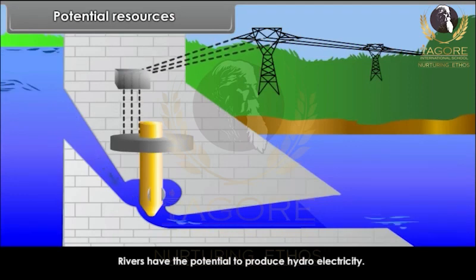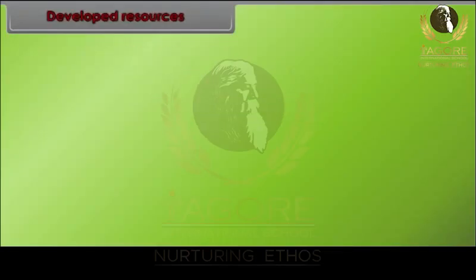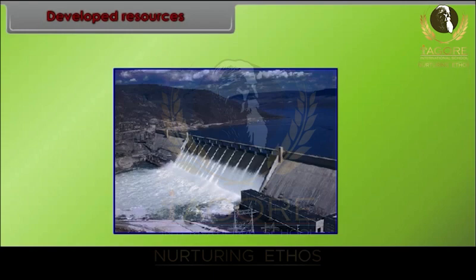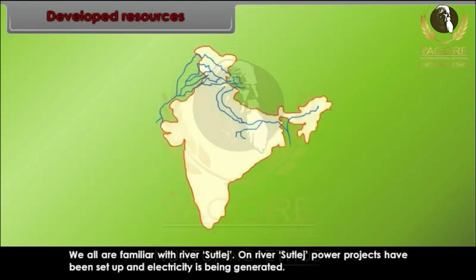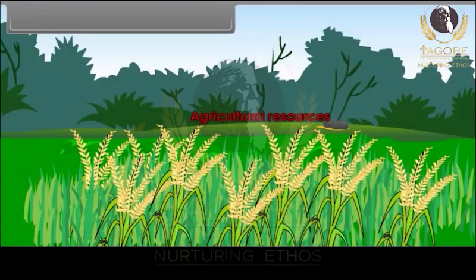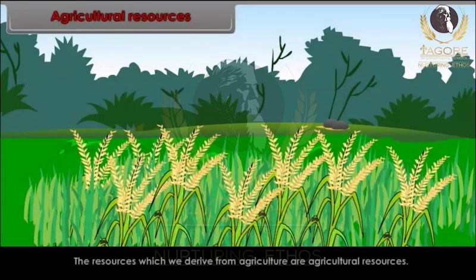Rivers have the potential to produce hydroelectricity. Developed resources are those resources which are actually in use. For example, on river Sutlej, power projects have been set up and electricity is being generated, making it a developed resource.